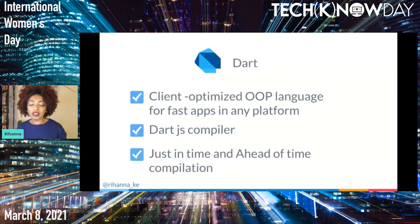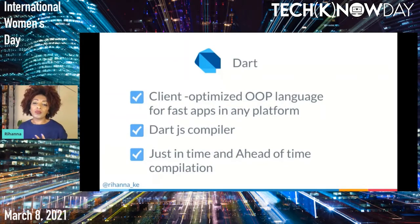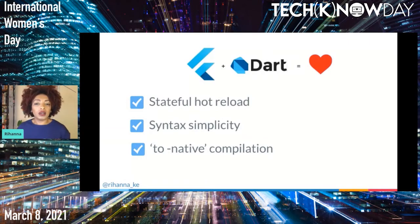One of the best features of Flutter is the ability to see code changes in real-time in an emulator or connected device. This is thanks to Dart, because it can be both interpreted and compiled. Just-in-time (JIT) compilation enables Flutter to recompile code directly on the device or emulator while the app is running during development, enabling the hot reload feature. On the other hand, ahead-of-time (AOT) compilation allows the libraries and functions used by Flutter app code to be compiled directly to native code. This is why Dart pairs well with Flutter — it takes credit for the stateful hot reload, syntax simplicity, declarative code style, and native compilation.